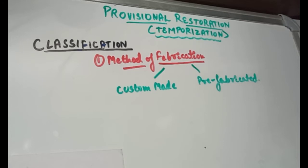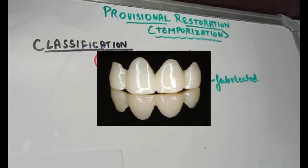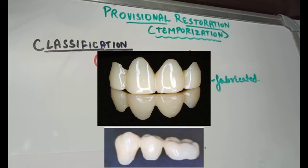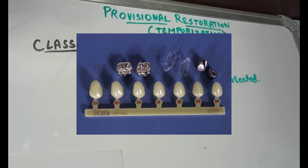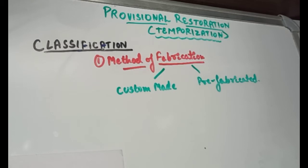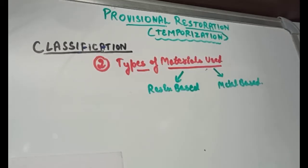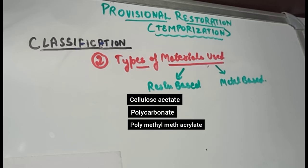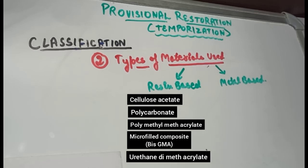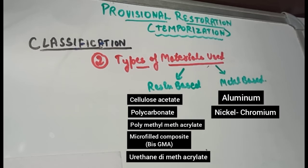Now let's see the types of provisional restoration. They can be classified based on method of fabrication as custom-made and prefabricated. Custom-made restorations are fabricated to reproduce the original contours of the tooth using a variety of direct or indirect methods. Prefabricated provisional restorations are commercially available crowns in various sizes but can only be used for single-tooth restorations. Based on material type, they can be resin-based — including cellulose acetate, polycarbonate, polymethyl methacrylate, micro-filled composite bis-GMA, urethane dimethacrylate, or bisacryl composites — or metal-based, such as aluminium, nickel-chromium, and tin-silver.